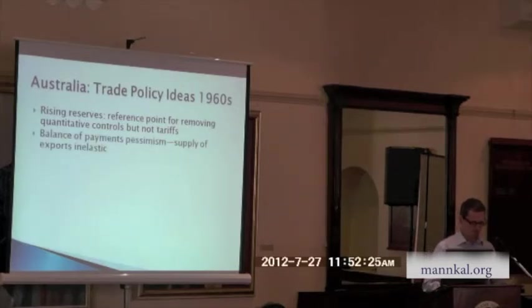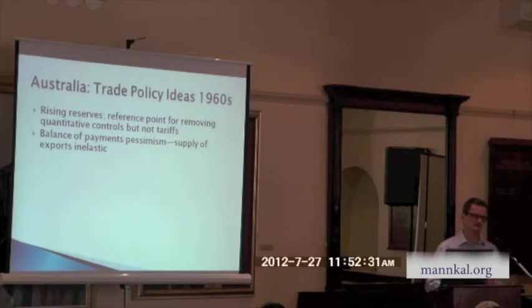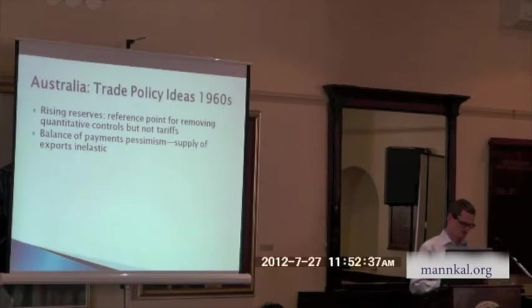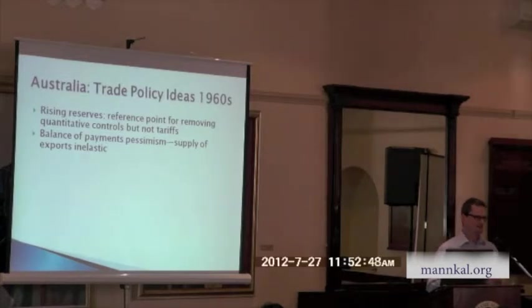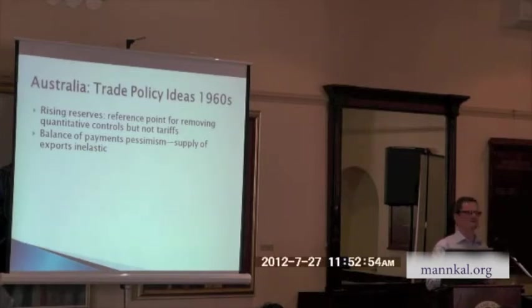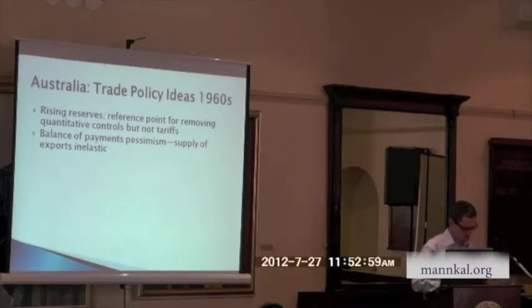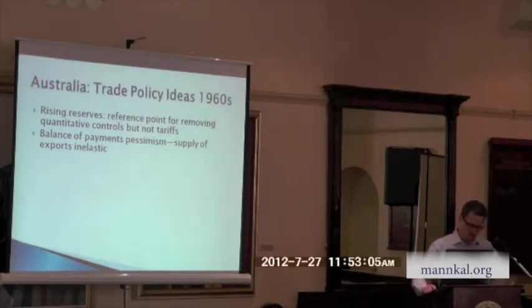There was balance of payments pessimism in this period, really developed in the 1950s, continuing into the 1960s. It was thought that rural production couldn't increase very much, exports couldn't be diversified, and there was pessimism about developing a variety of new markets. Commonwealth Preference had a big role to play here — if you were pretty much trading in the narrow channel of the Commonwealth, pessimism about the ability to trade was understandable. That pessimism persisted through the 1960s.